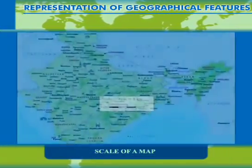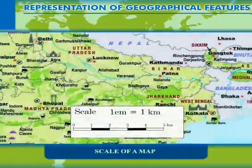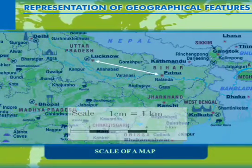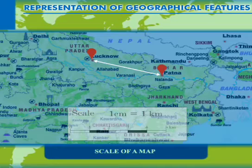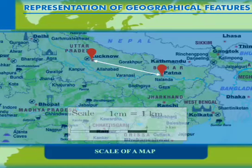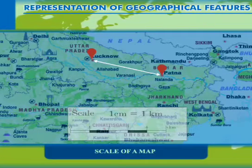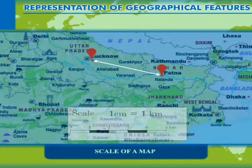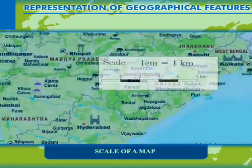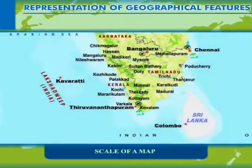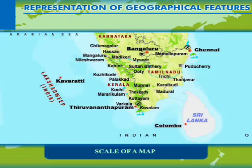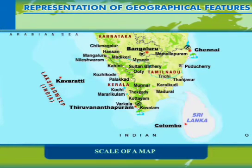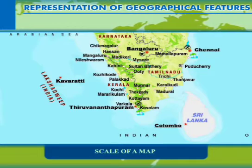All the features on the map, including the distance between two points, cannot be shown or marked exactly as on the land. Therefore, the area on the ground is reduced proportionately to fit the size of the surface on which the map is drawn. The tool that helps us reduce the size of the earth and calculate the exact distance between two points on the ground as represented on the map is the scale of the map.